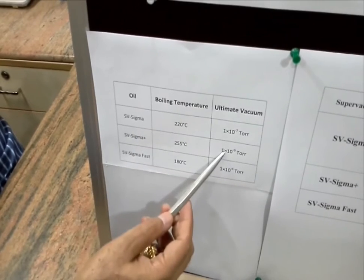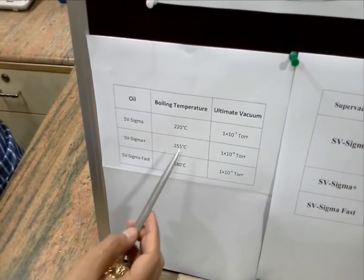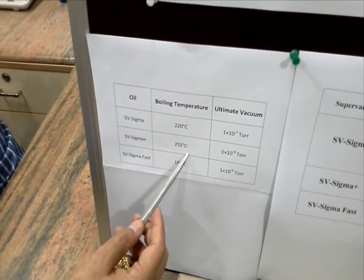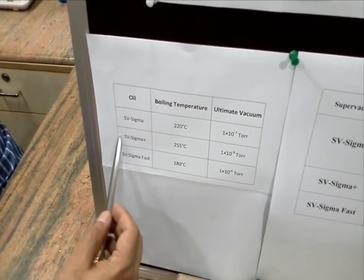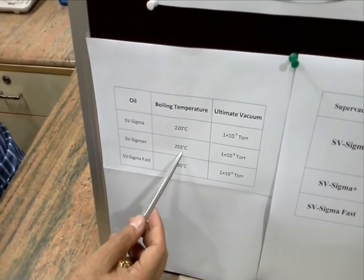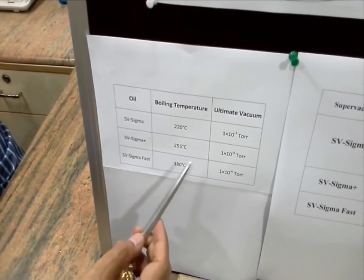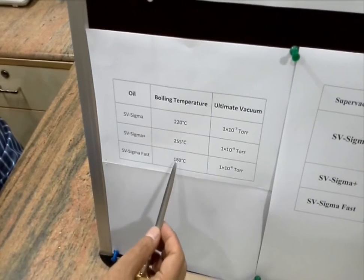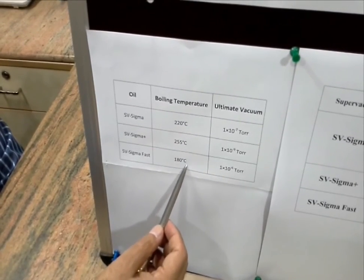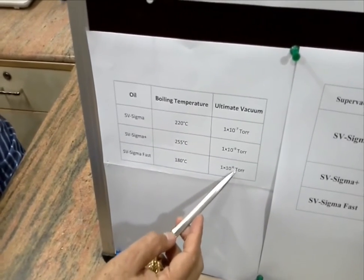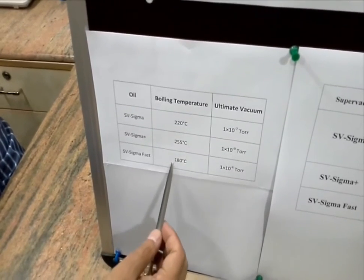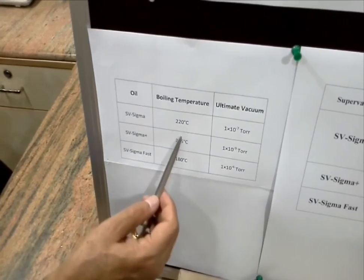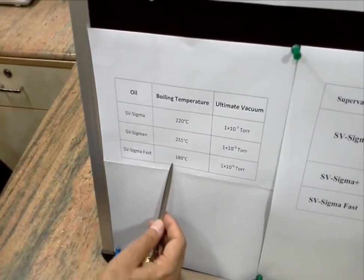However, if we require a vacuum even above this — for example for research purposes — we could always go for an oil with a higher boiling temperature, say about 255 degrees centigrade. Supervac manufactures SV Sigma Plus, which meets this criteria. Or sometimes vacuum speed is extremely important and vacuum level is not that important, so we go for an oil with an even lower boiling temperature of 180 degrees centigrade, which gives a vacuum of around 10 to the power of minus 6 Torr, but that doesn't matter because we are getting the vacuum very, very fast. So diffusion pump oils are manufactured with these three boiling temperatures.